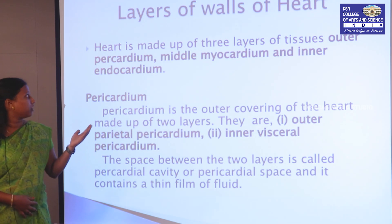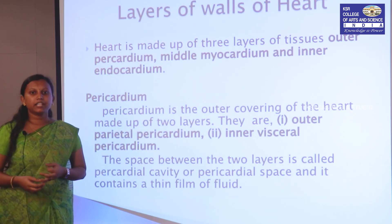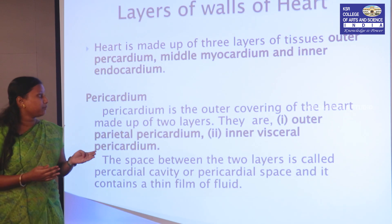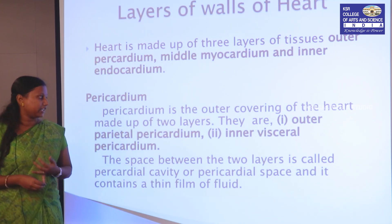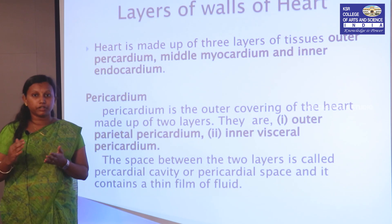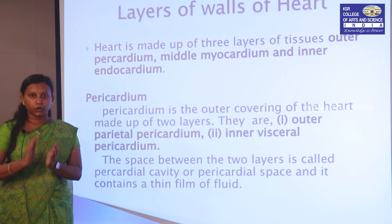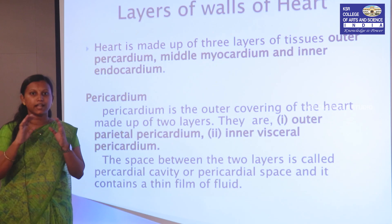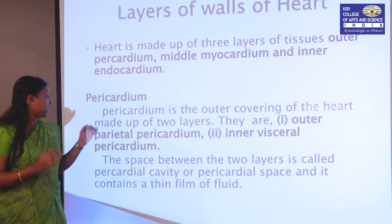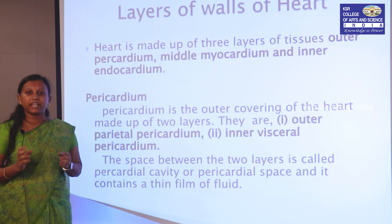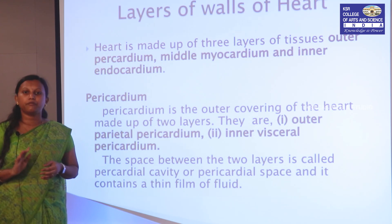Our heart consists of three layers: the outer pericardium, the middle myocardium, and the inner endocardium. The pericardium is the outermost covering and is divided into the outer parietal pericardium and the inner visceral pericardium. The parietal pericardium is further divided into a fibrous layer and a serous layer. The fibrous layer protects the heart from external damage and anchors it to the diaphragm. Between the visceral and parietal layers there is a pericardial space containing pericardial fluid, of which about 25 to 35 ml is present in the human heart.